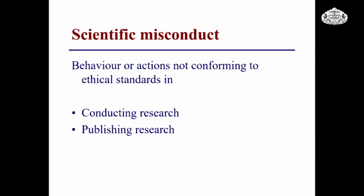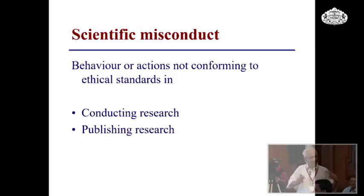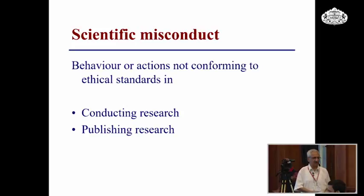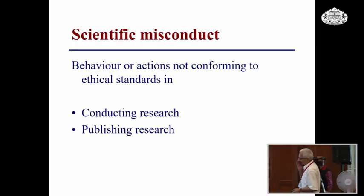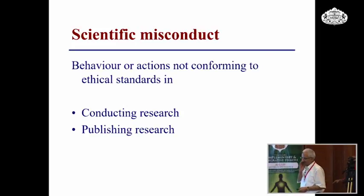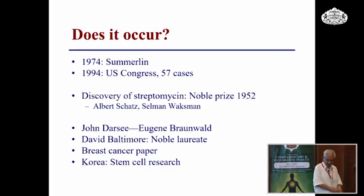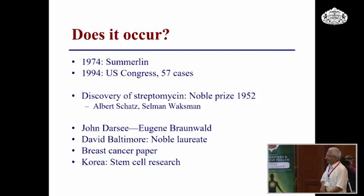Behavioural actions that do not conform to ethical standards in two places — conducting research or publishing research — comprise what is called scientific misconduct. So publication ethics is focused on publishing research, but there is scientific misconduct which encompasses something more than just publication ethics. So does it occur?